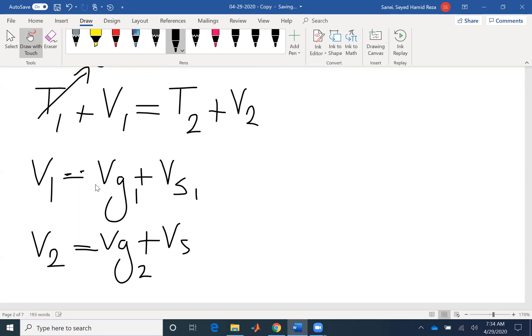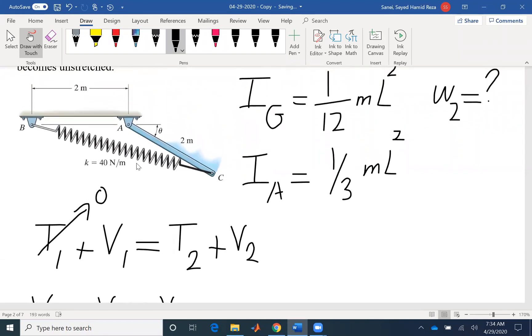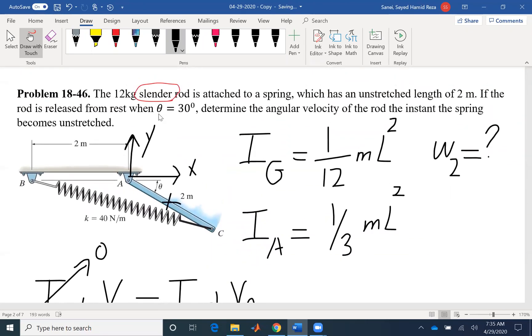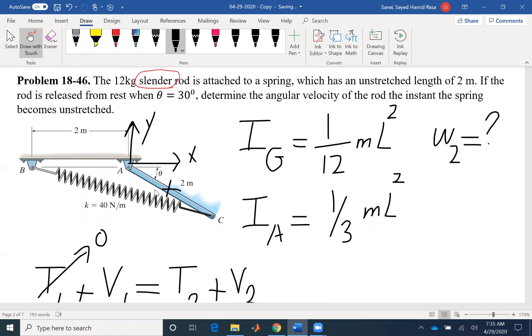If you look at the geometry here, whenever we are talking about gravitational potential energy, we have to look at the center of gravity, how much the center of gravity is moving up or down. For this problem, it's easier to set our coordinate system here, X and Y. I want to know what would be the change of potential energy with respect to that. We need to find the final angle. If the initial angle is 30 degrees, what would be the angle when the spring becomes unstretched or the length would be 2 meters? We can use geometry equations, but there is a better way to do it.